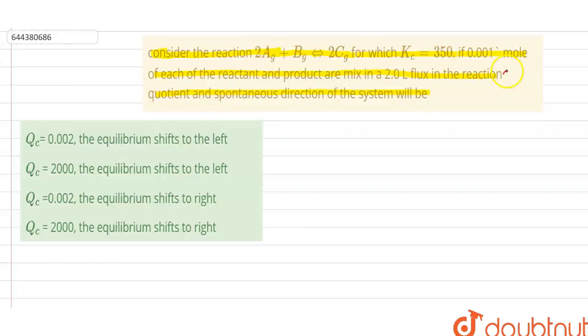Here the reaction quotient is denoted by Q. The reaction quotient tells about the extent of relative amounts of products and reactant present during a reaction at a particular time, and it also tells about the direction in which the reaction is likely to proceed.